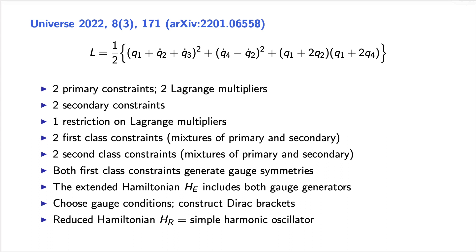This is the Lagrangian — a relatively simple-looking system with just four generalized coordinates, but the Lagrangian is singular. Carrying out the Dirac-Bergman algorithm, we find two primary constraints, two Lagrange multipliers, two secondary constraints, and one restriction on the Lagrange multipliers. There are two first class constraints, which are mixtures of primary and secondary constraints, and two second class constraints, which are also mixtures. Both first class constraints generate gauge symmetries, as I discuss in detail in the paper. The extended Hamiltonian includes both gauge generators. I then assign gauge conditions and use Dirac brackets to eliminate the first and second class constraints, leaving a reduced Hamiltonian that describes a simple harmonic oscillator.